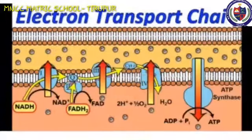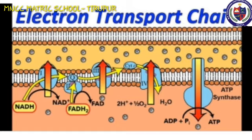Electron transport chain occurs in the inner membrane of the mitochondria. NADH2 and FADH2 molecules formed during glycolysis and Krebs cycle are oxidized to NAD+ and FAD+ to release energy via electrons. The electrons move through the system, releasing energy which is trapped by ADP to synthesize ATP. This is called oxidative phosphorylation. In this process, oxygen is the ultimate acceptor of electrons and gets reduced to water.